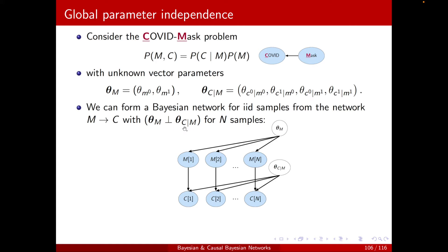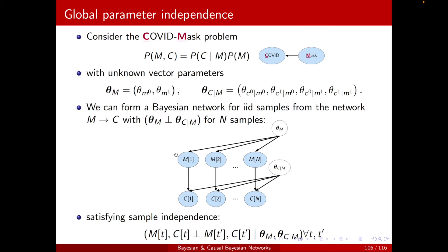This representation implies the following independence: each instance is independent of the other instances conditioned on the parameters. For example, m1 is independent of m2 — I cannot get there because the observed node blocks, or at the bottom via c1 there is already a V structure. So they are independent, and we managed to represent this IID condition.